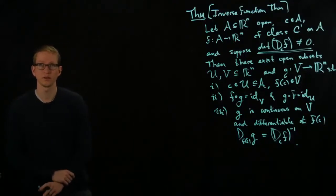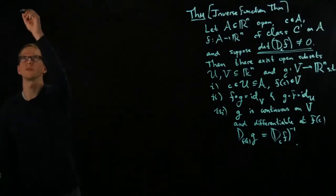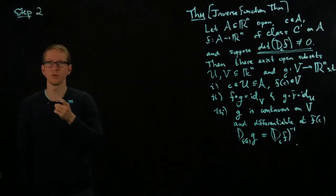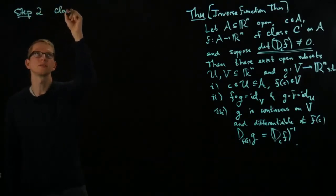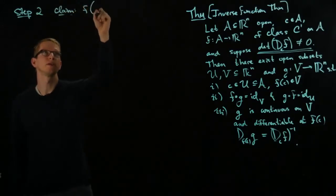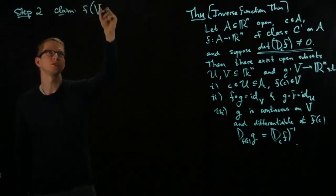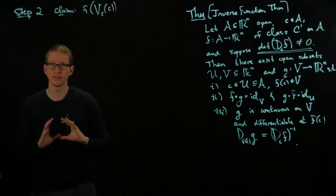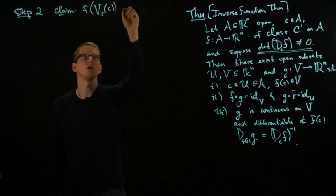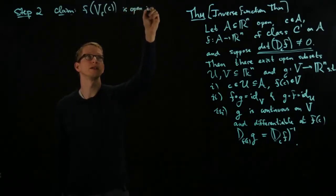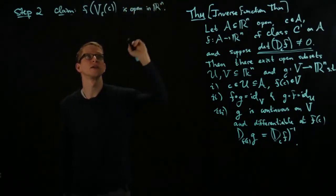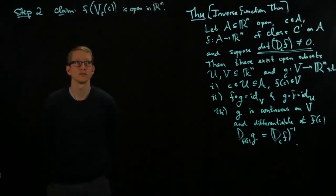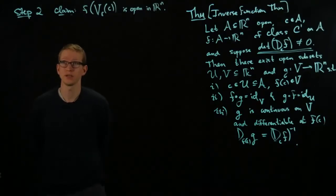So now let's briefly discuss the other three steps to prove the theorem. In step two, the claim is that F, the image of the open neighborhood around C, is open in R^n. And to tackle this theorem, it helps to draw a picture.